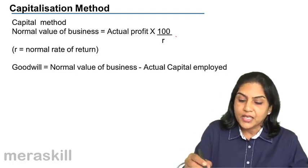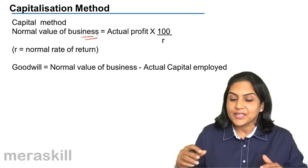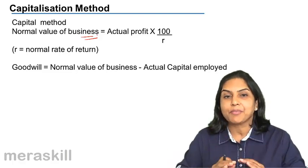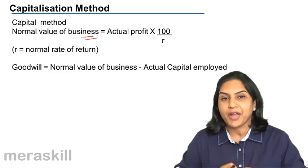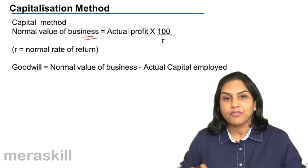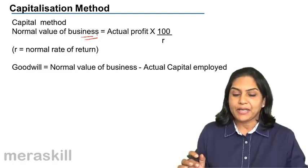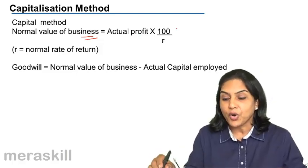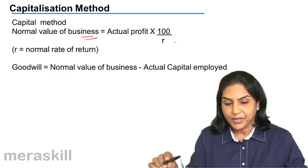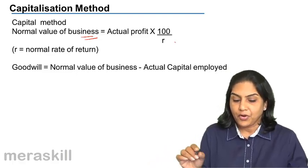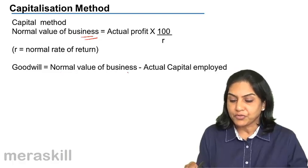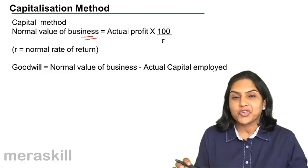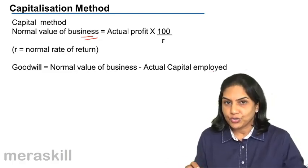What is goodwill? This normal value, when it is higher than the actual capital employed, we have goodwill. So we have employed a lower amount of capital and we generate a larger amount of profit. Under the capital method, the normal value of business is first computed as actual profit into 100 by normal rate of return. Therefore we get the normal value of the business, and when the actual capital employed is lower, the difference is said to be on account of goodwill.